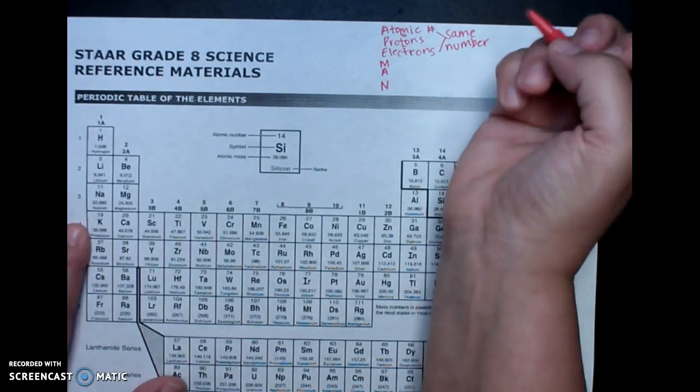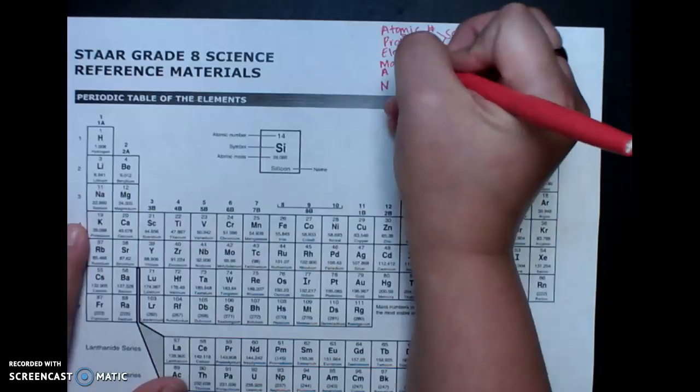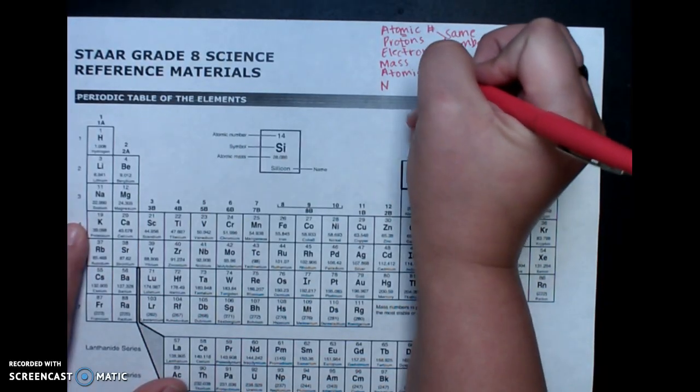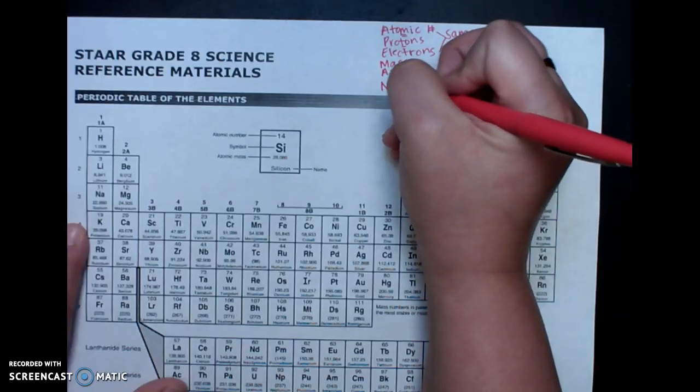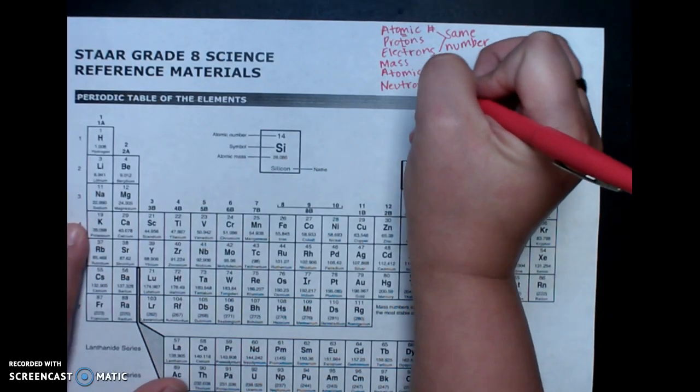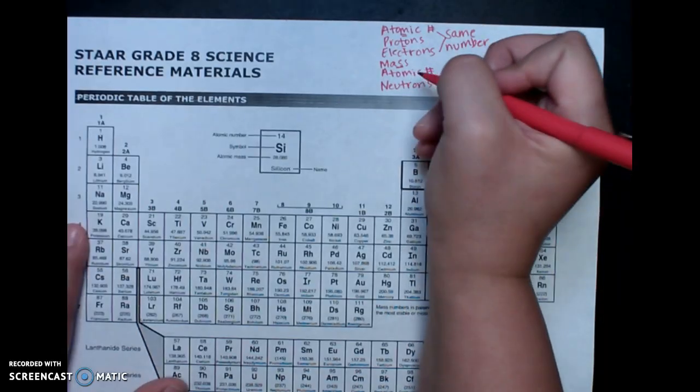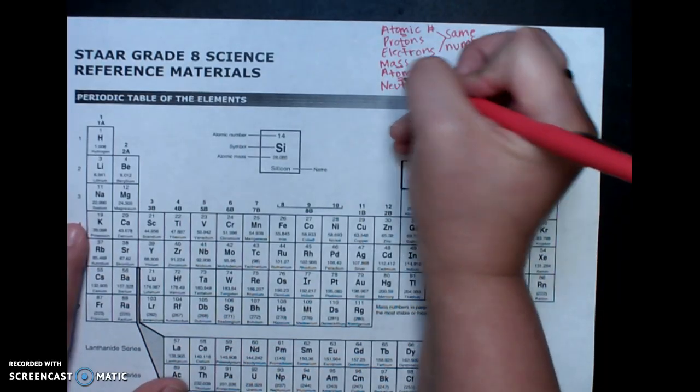The second part is MAN, which is mass, atomic number, and neutrons. So we'll have the mass minus the atomic number equals the number of neutrons.